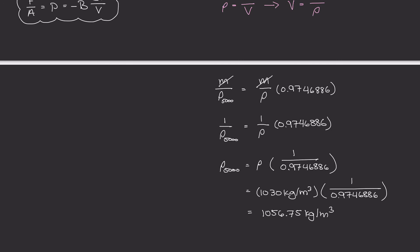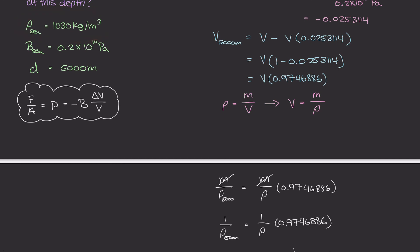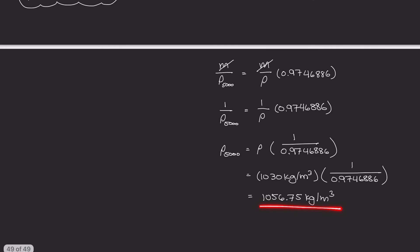And so if we compare this mass density at 5000 meters, we can see it's a little bit higher than the original mass density of seawater. And that was because since the volume got compressed by some amount delta V, then we know that the same amount of mass in the smaller volume is going to result in a slightly larger mass density, which is this 1056 kilograms per meter cubed.